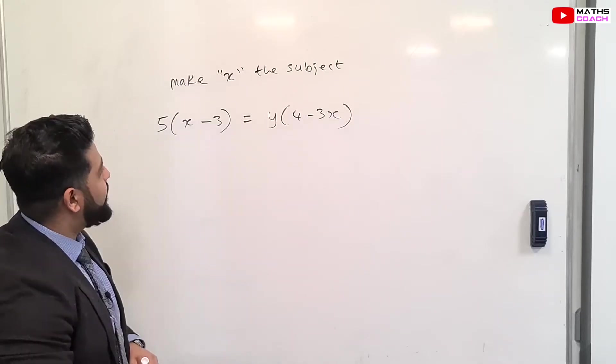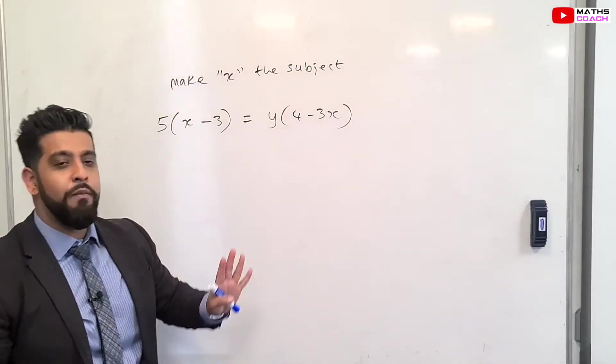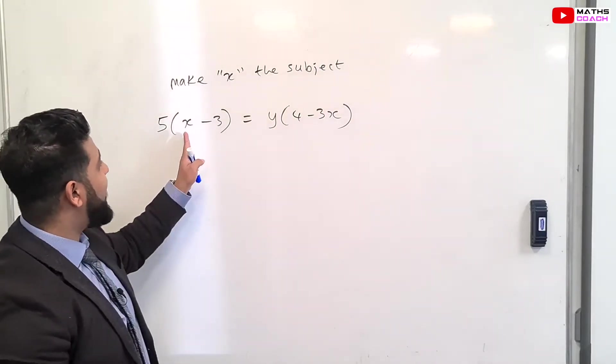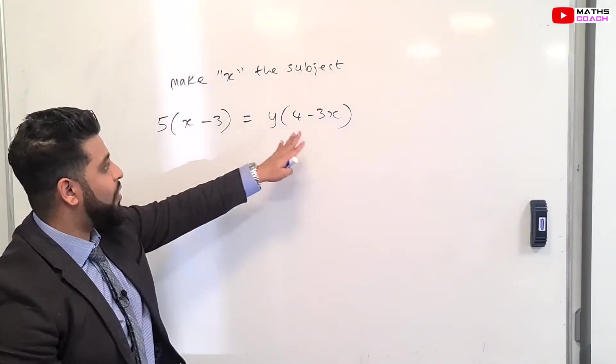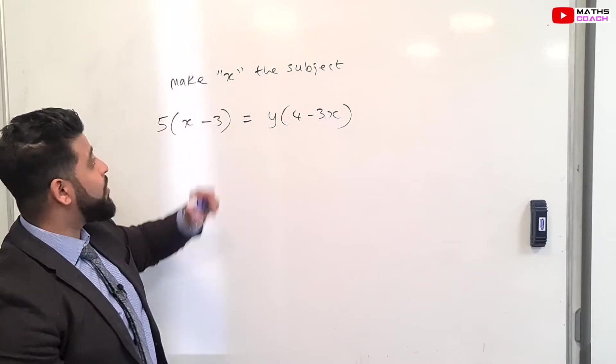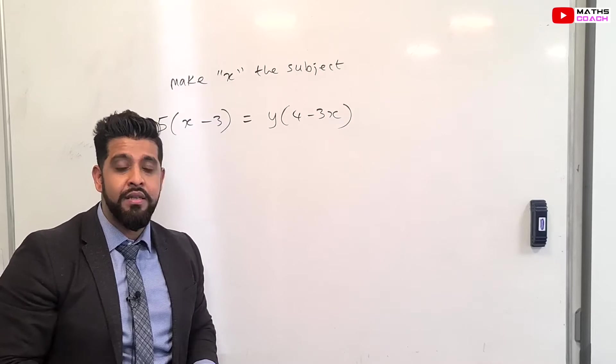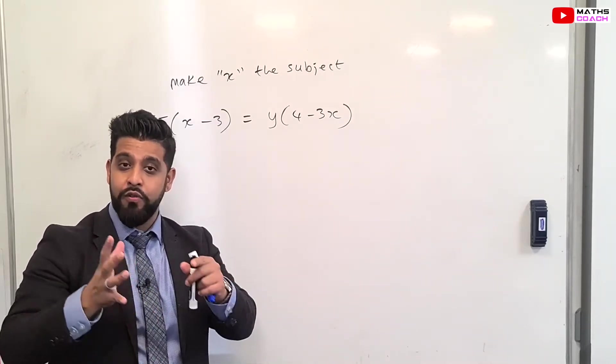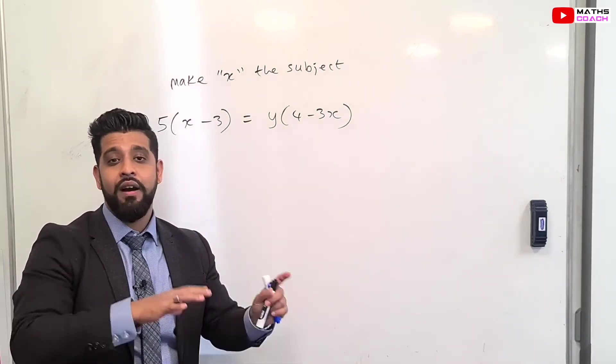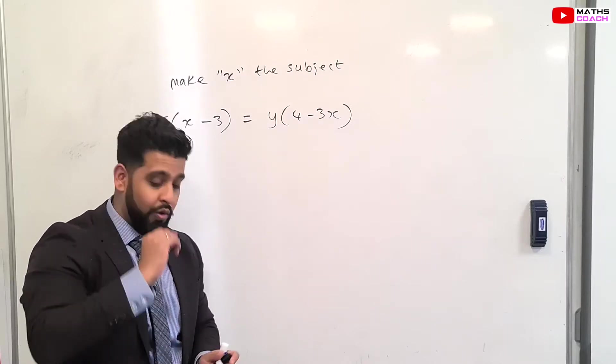Right, so on to our first question. You'll notice we have brackets on both sides and we have our letter X on both sides as well. And we've been told to make X the subject. The plan is as follows: we are going to expand the brackets, collect the X's over onto one side, and then isolate everything around it. So let's begin.